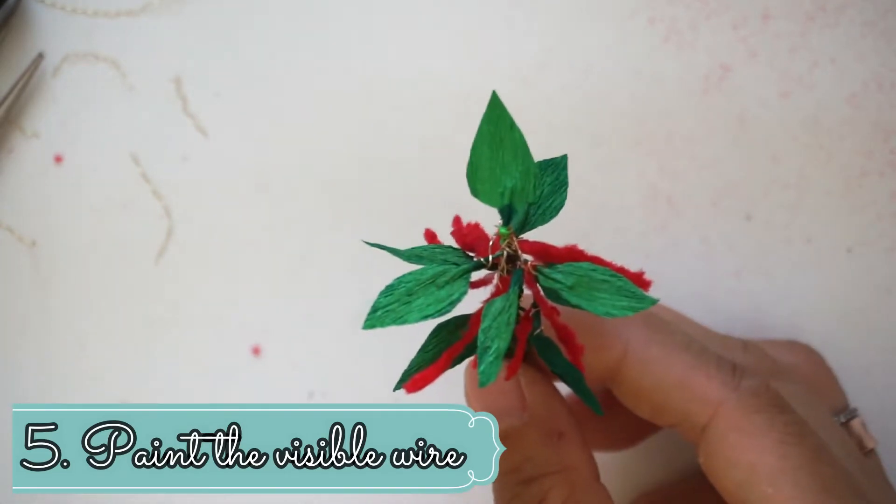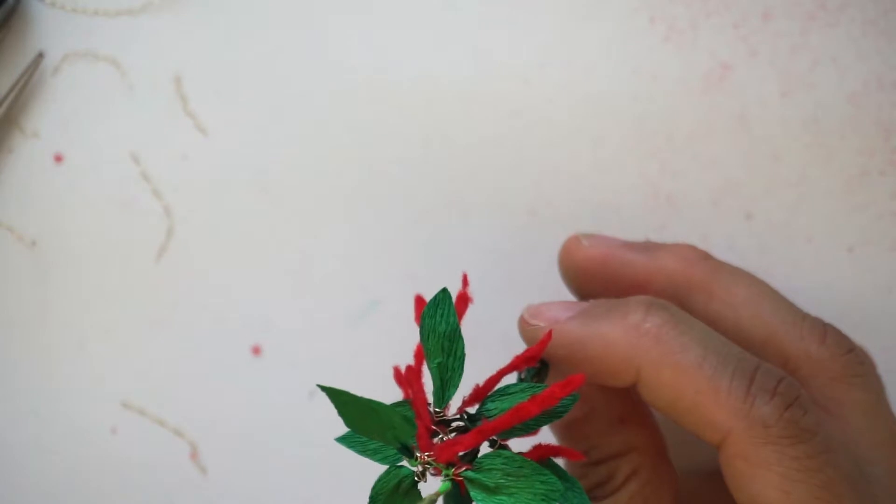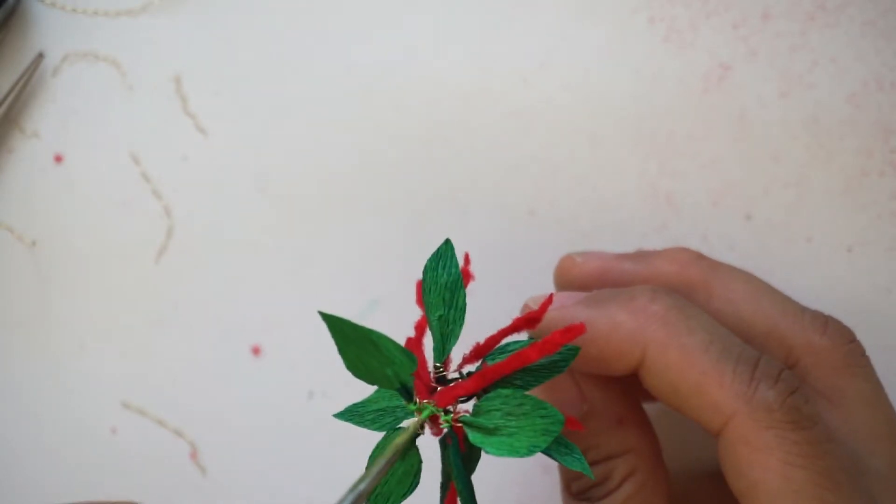If there are any visible wires, paint them with green just like I did so they will all blend together, and then let the paint dry.